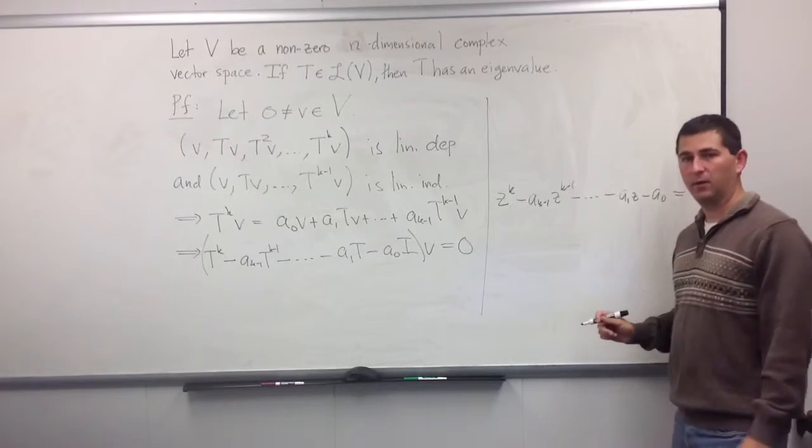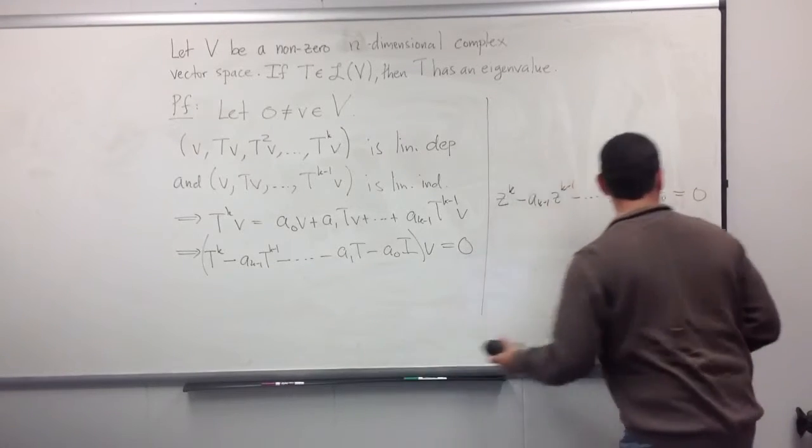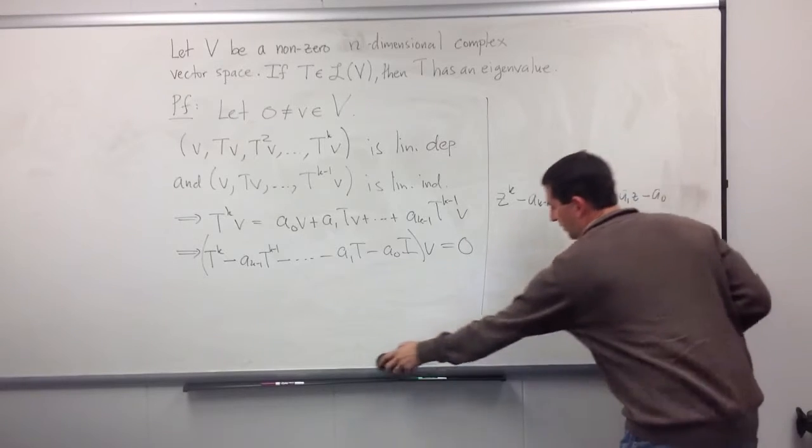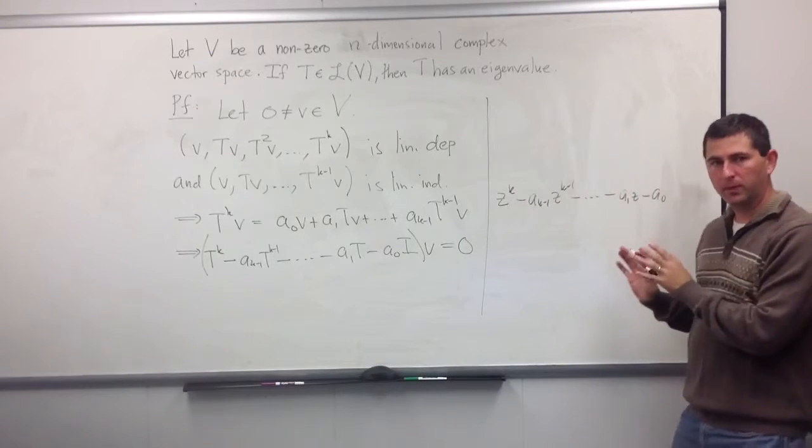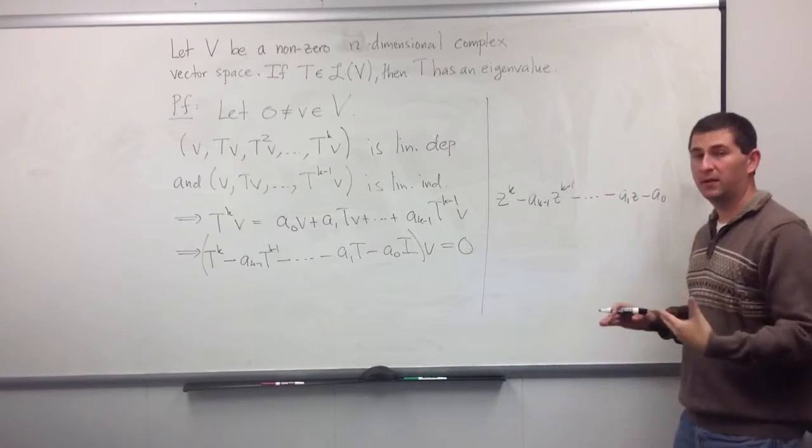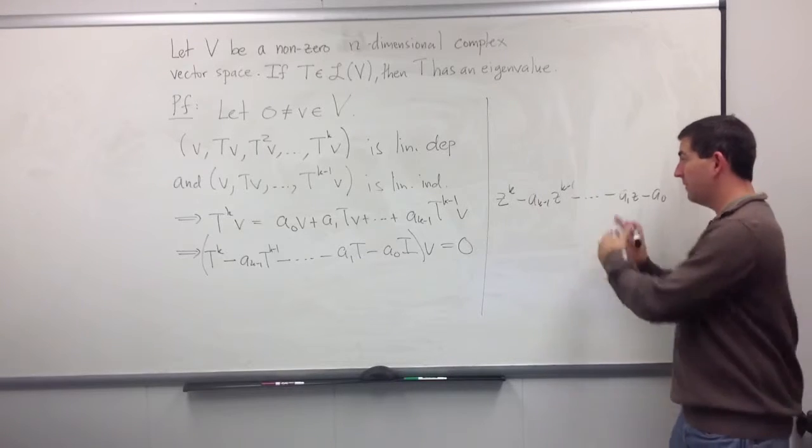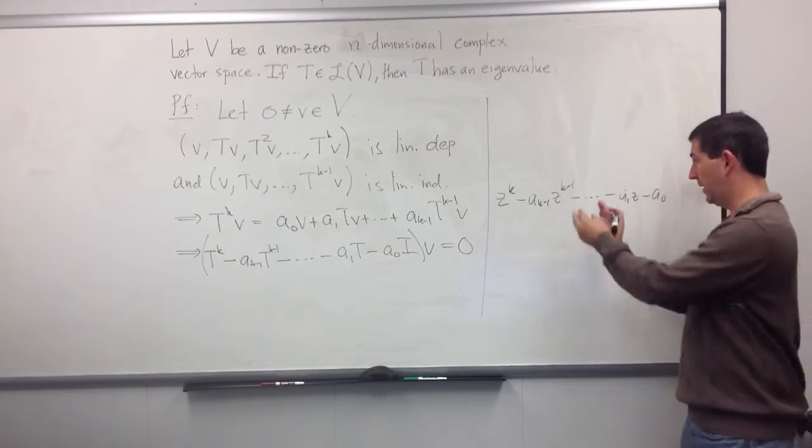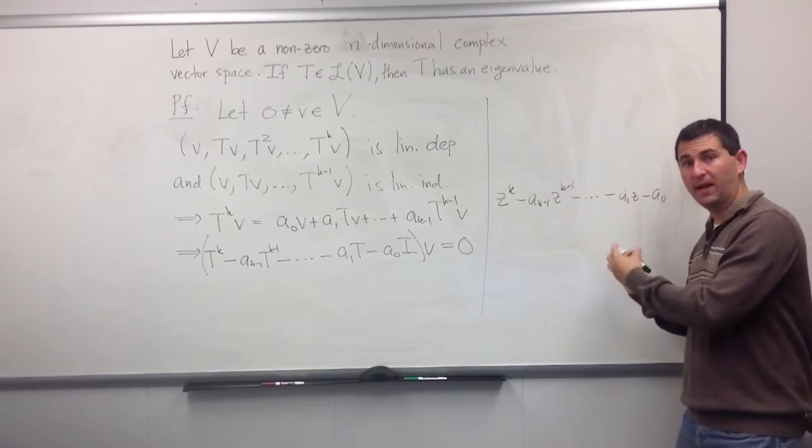And if this polynomial is going to equal... well, we're going to need it to equal 0. If you have this polynomial, mind you, this is a polynomial, and we're working over the complex numbers. So we can factor this. The fundamental theorem of algebra tells us we can factor this as a product of linear factors.